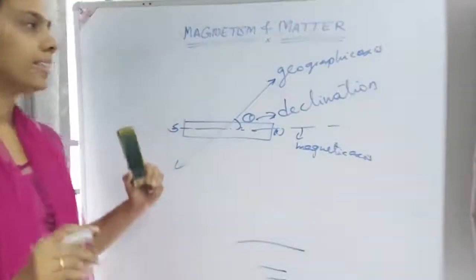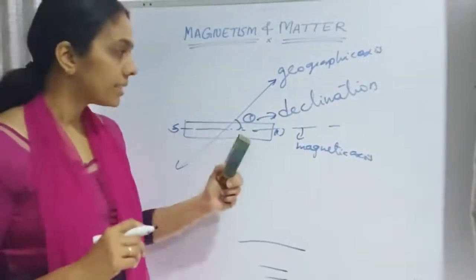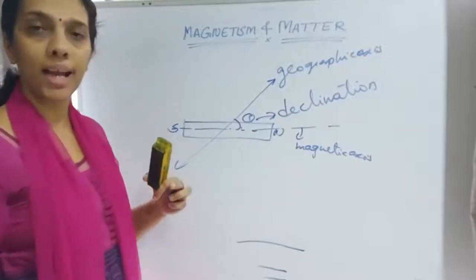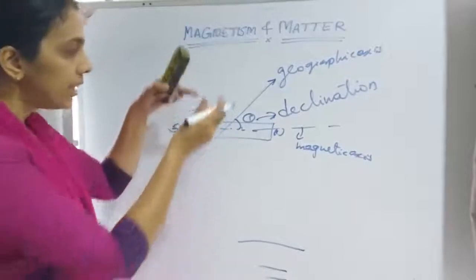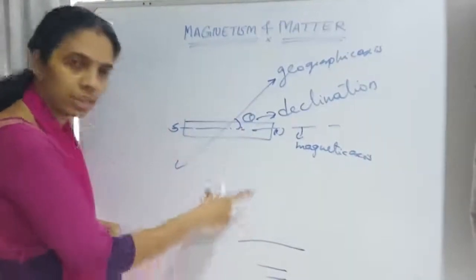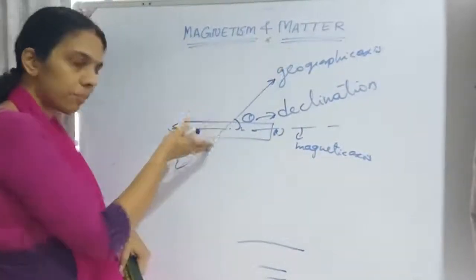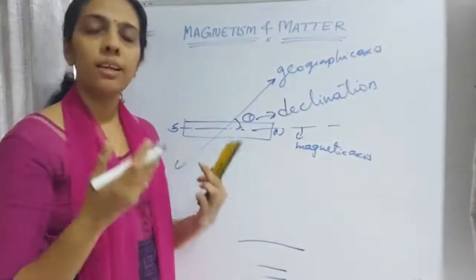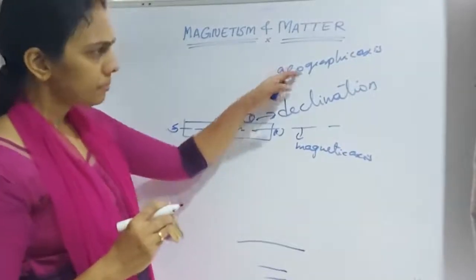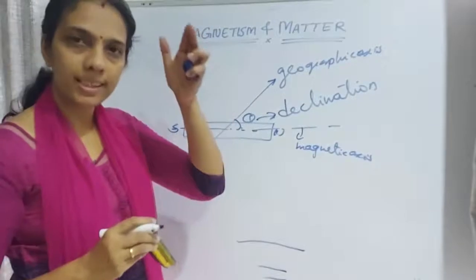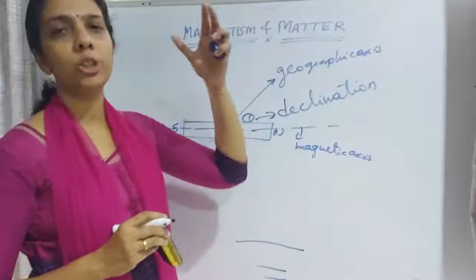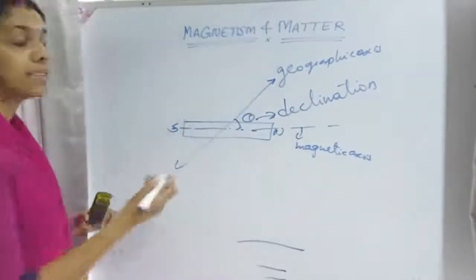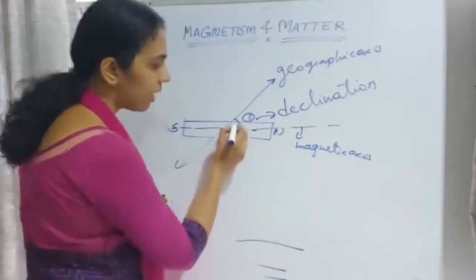Magnetic declination is the angle between the geographic axis and the magnetic axis. We can also describe it using planes — the magnetic meridian and the geographic meridian. The angle between the geographic meridian and the magnetic meridian is the magnetic declination. Whether using axes or planes, that angle is called declination.